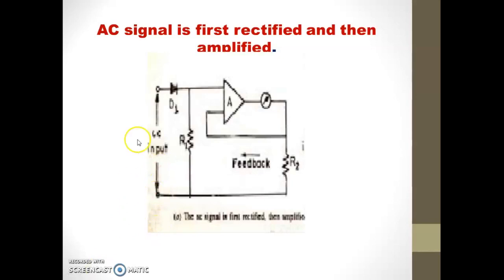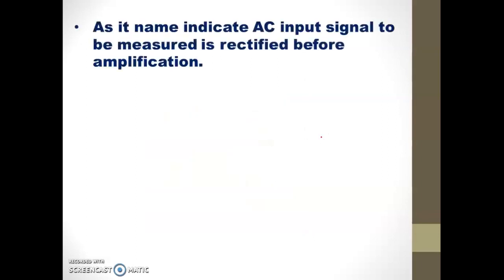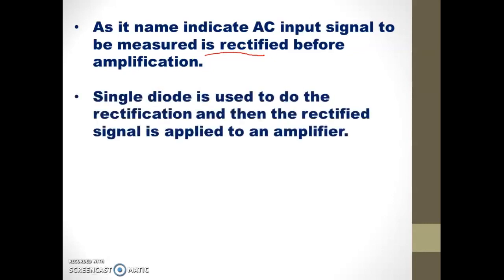As shown in this arrangement, a simple diode is connected at the input side. This diode is used for the rectification. After that, the output generated from the diode goes to the amplifier for the amplification process. The AC input signal, which is to be measured, is first applied to the rectifier. The simple diode connected at the input side converts the AC signal into DC.